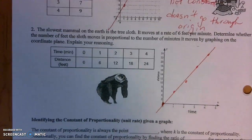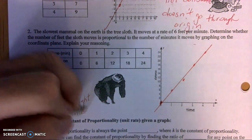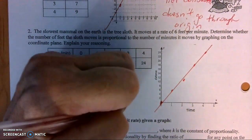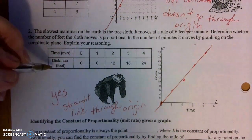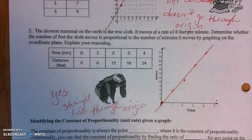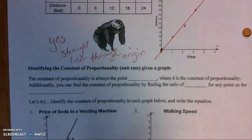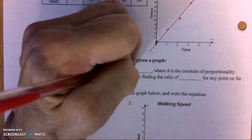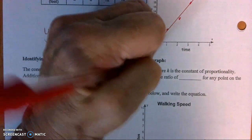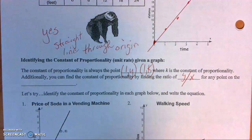Is this a proportional relationship? Yes — it's a straight line through the origin. I can also confirm it's proportional by dividing feet by minutes: 6, 6, 6, 6 — all the same. Now, when we have a graph we need to identify the constant of proportionality. The constant of proportionality is always the point on the graph where x is 1 — and the y-value at that point is k, your constant of proportionality.